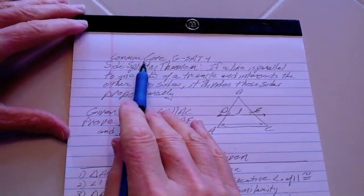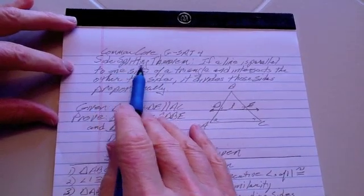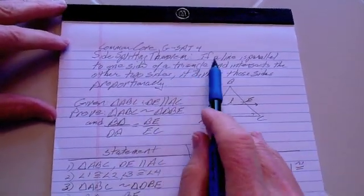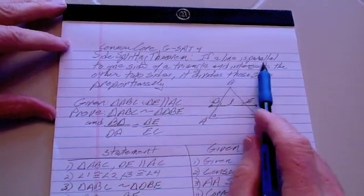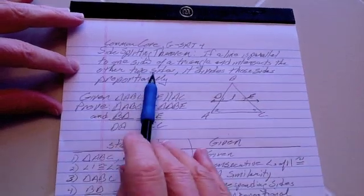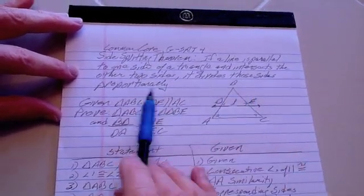Today we're showing the common core. This is one of the requirements of the common core, the side splitting theorem. And as you can see right here, if a line is parallel to one side of a triangle and intersects the other two sides, it divides those sides proportionally.